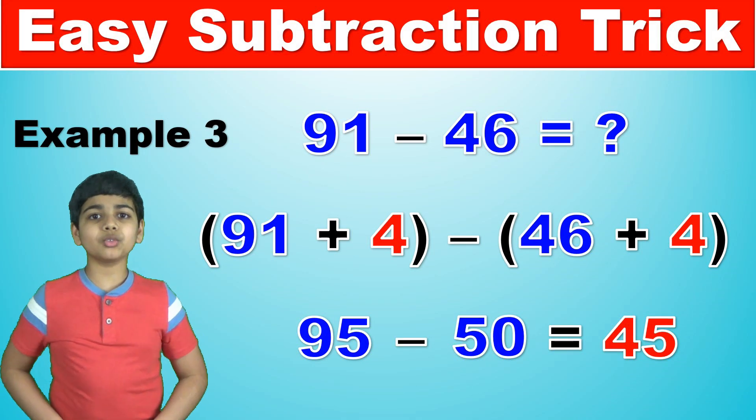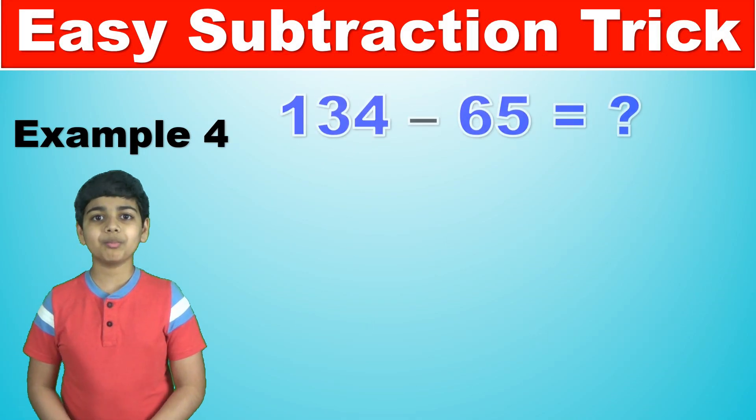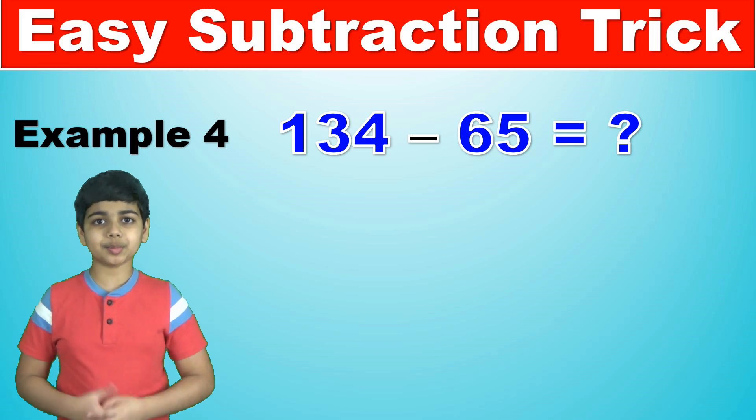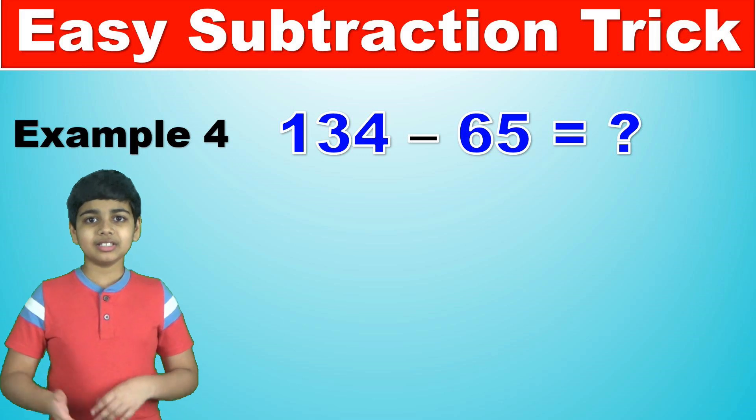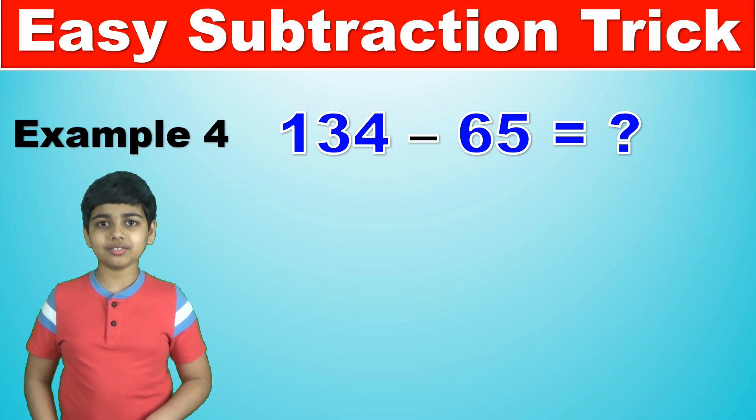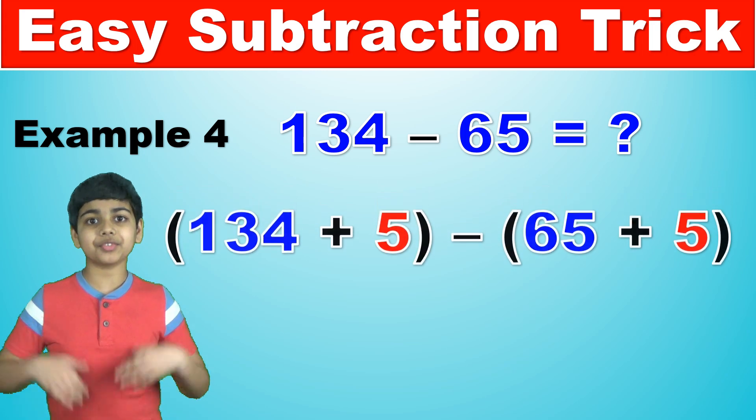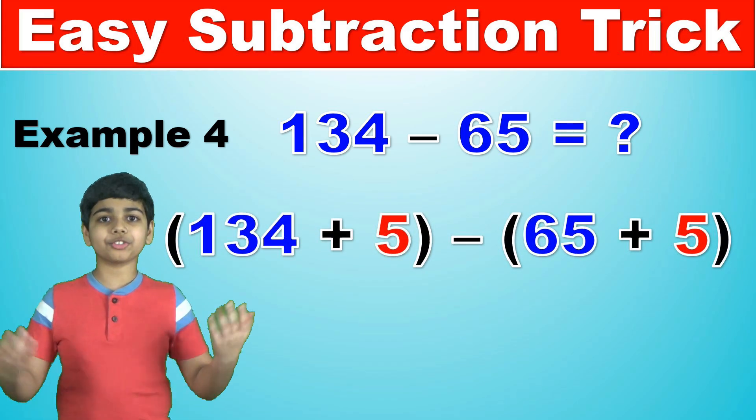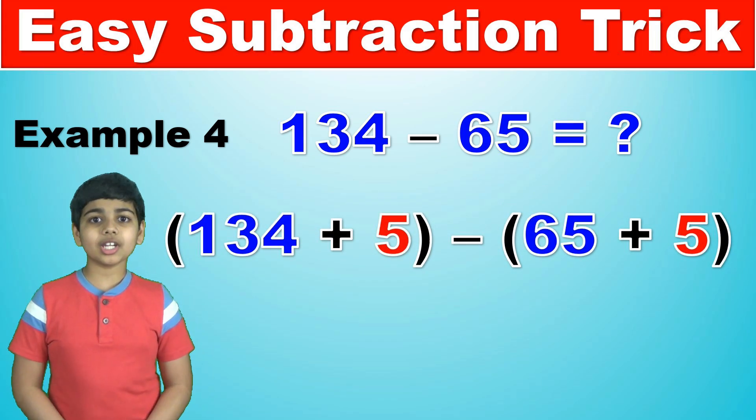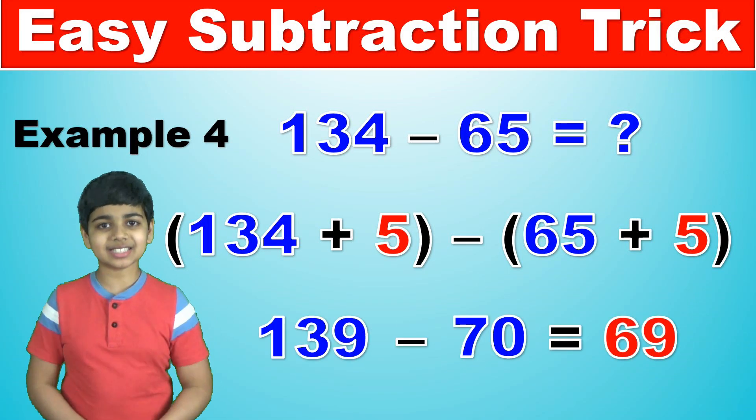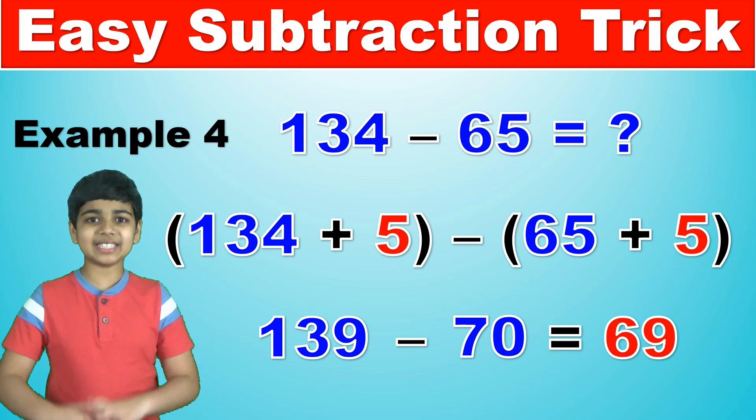Let's say 134 minus 65. So again, 65, the nearest multiple of 10 is 70. The difference between 70 and 65 is nothing but 5. So 65 plus 5. And of course, we're going to do the same thing to 134, add 5 to that. And so you have 139 there. So now you have 139 minus 70. And the answer to this is 69. So really easy.